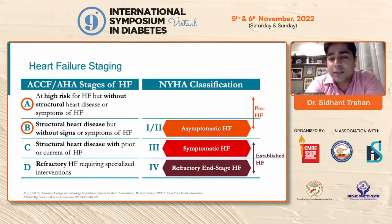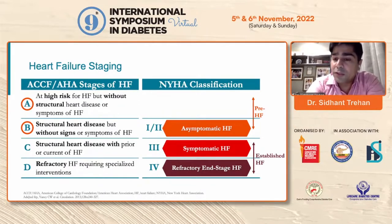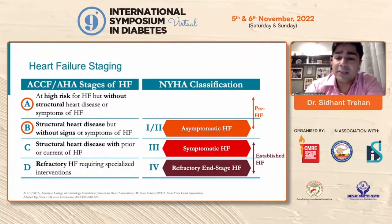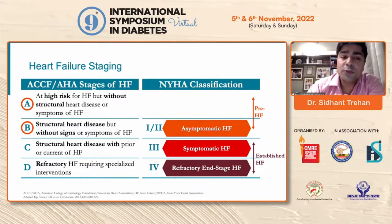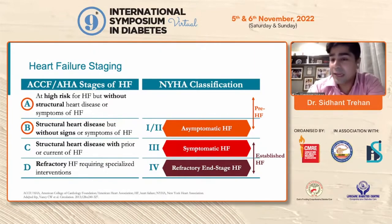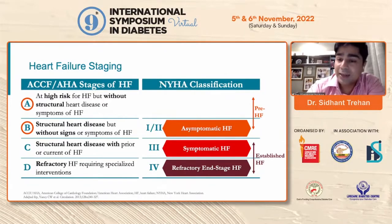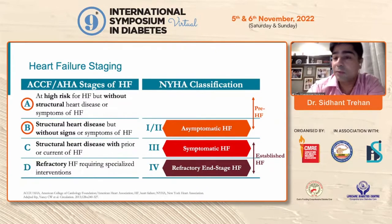Classically, heart failure has been classified by the NYHA classification since the 1920s, but this is pretty much based on treatment of patients and how patients respond to treatment — it's all symptom-based. The prevention side of things cannot be taken care of with this classification alone. Recently, the AHA introduced a new staging system where heart failure is staged A, B, C, and D. Stage A is a patient at high risk for heart failure but without any structural heart disease — meaning any patient with risk factors such as diabetes, hypertension, or dyslipidemia. If we look at them as Stage A for heart failure, we need to act early to prevent them from developing heart failure.